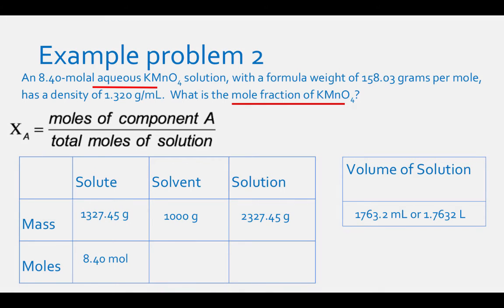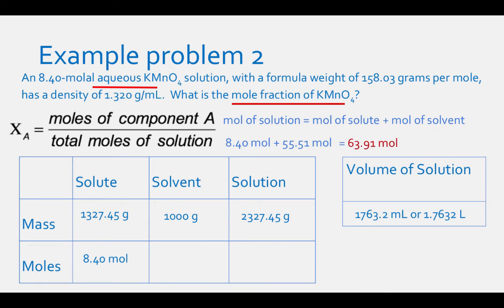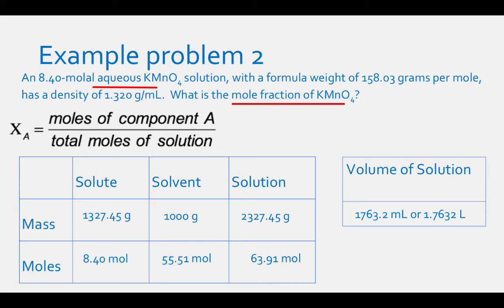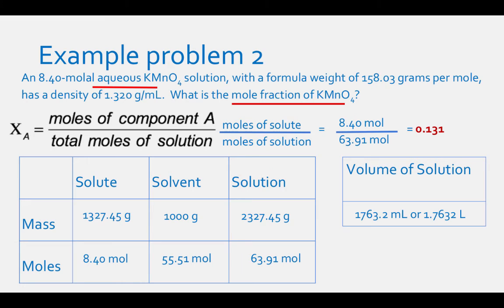1,000 g ÷ 18.016 g/mol = 55.51 moles of solvent. Moles of solution: 8.40 + 55.51 = 63.91 moles. Moles of solvent = 55.51 and moles of solution = 63.91. Mole fraction of KMnO₄: 8.40 mol ÷ 63.91 mol = 0.131.